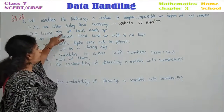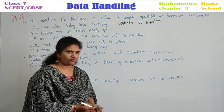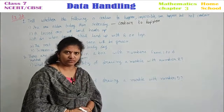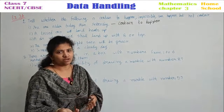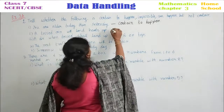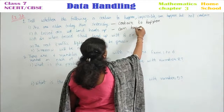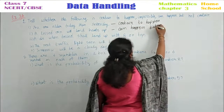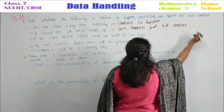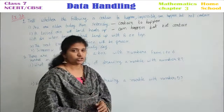A tossed coin will land heads up. If you toss a coin and it falls down, will it land heads up? Don't know — it may be heads or tails. How can you say it is heads? So what can you say here? Can happen but not certain. It may be heads or it may be tails — may happen or may not happen.